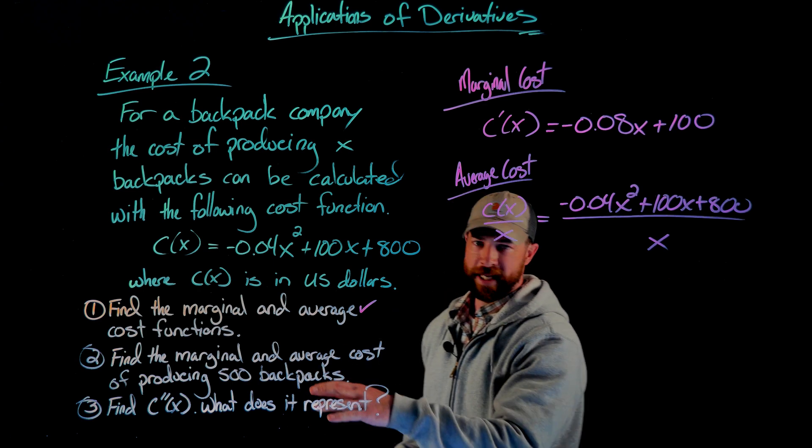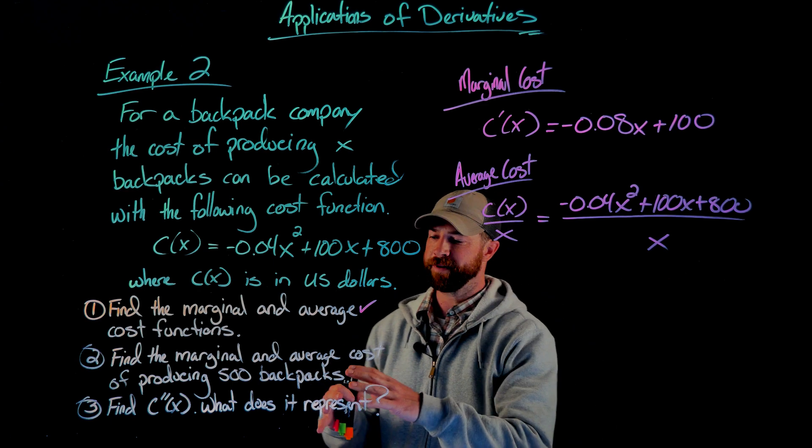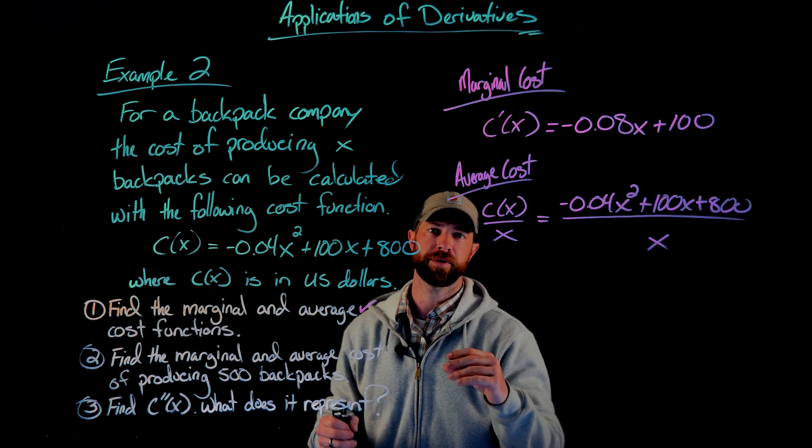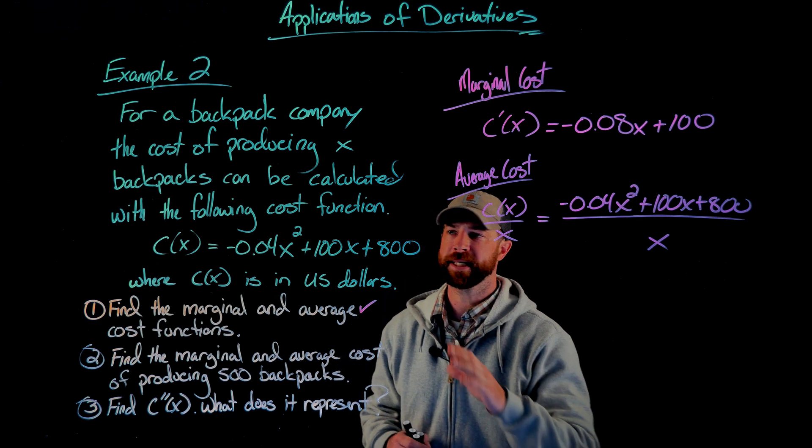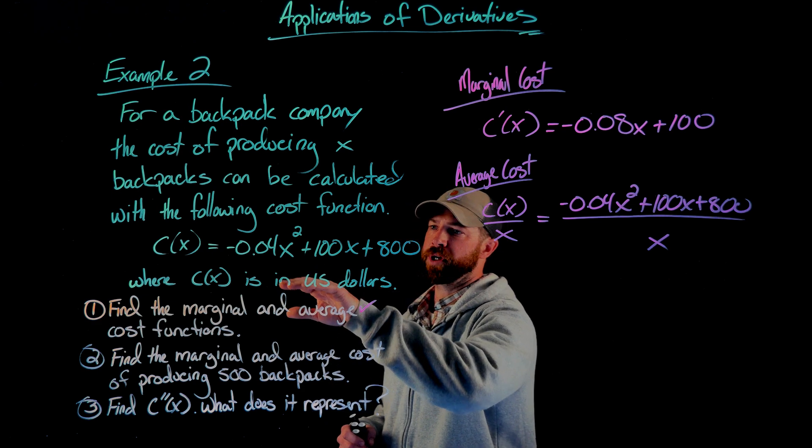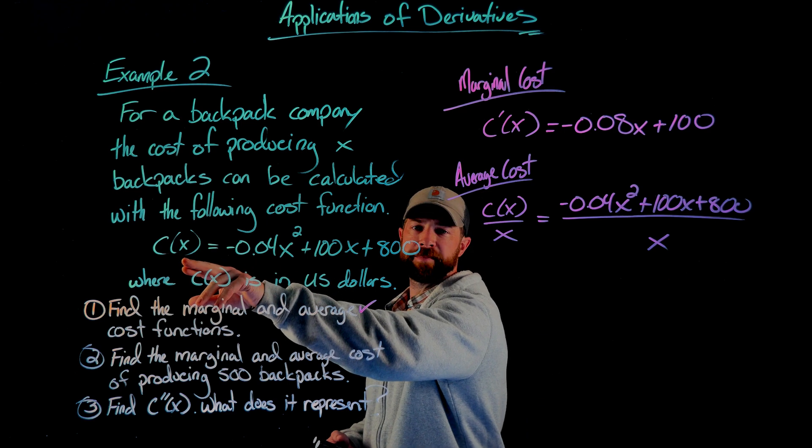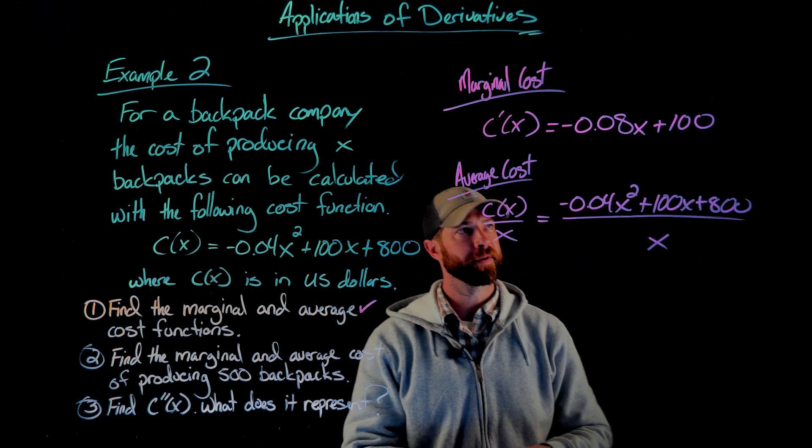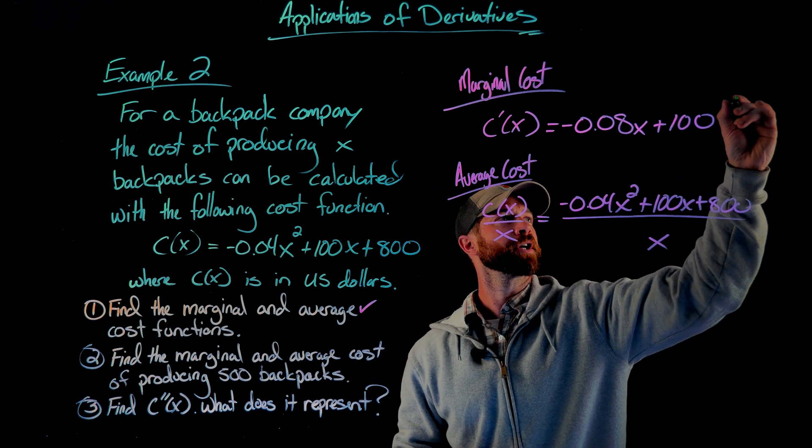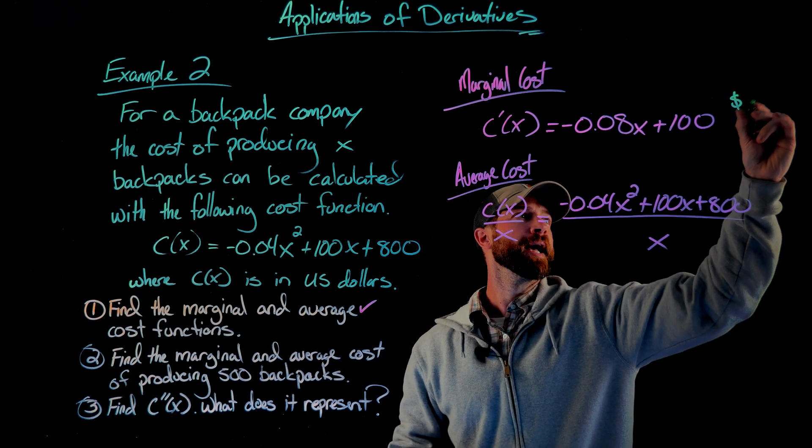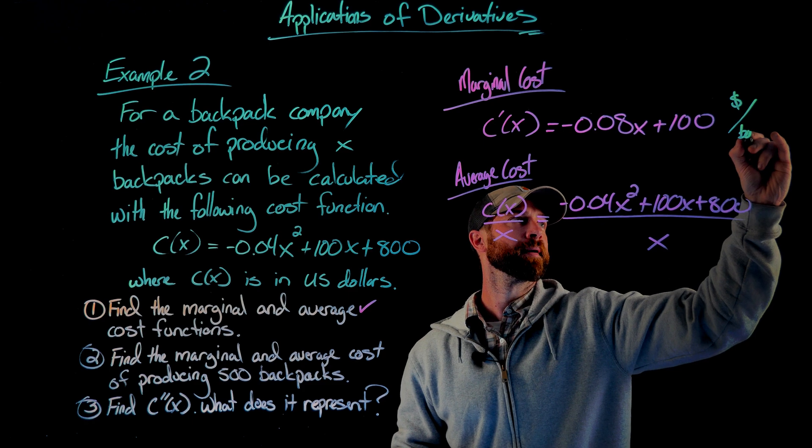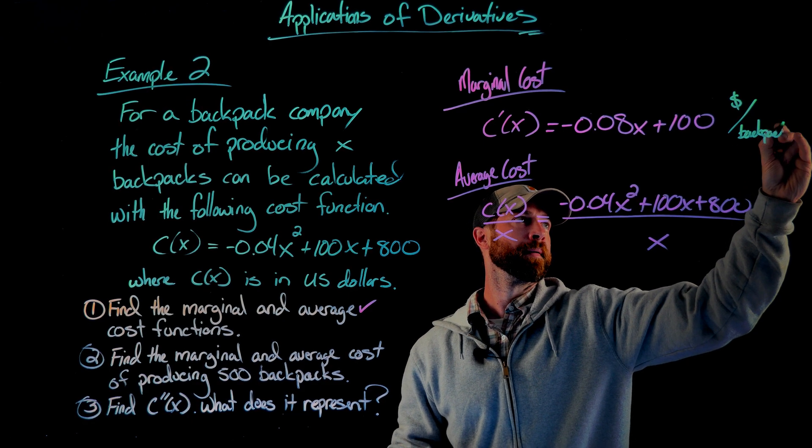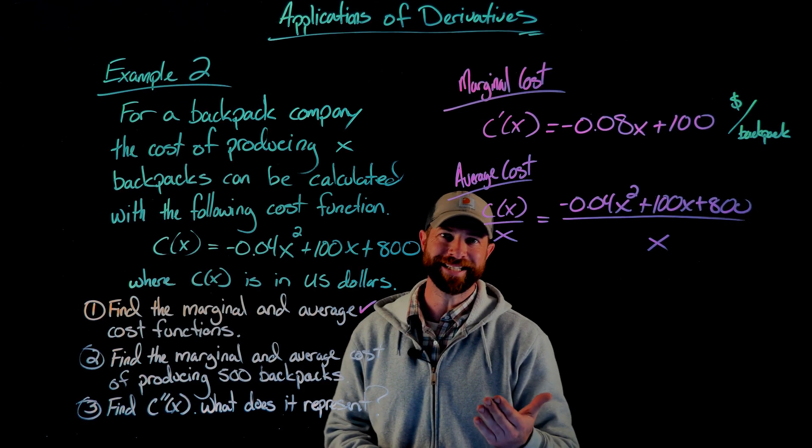Before I move on to the second question and actually calculate for 500 backpacks, I just want to talk about the units. This is the same thing as we've done previously. If our original function inputs number of backpacks and outputs cost, then the first derivative would have the units of cost in dollars per backpack.